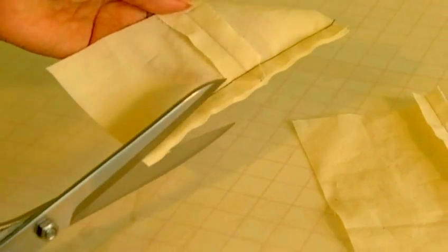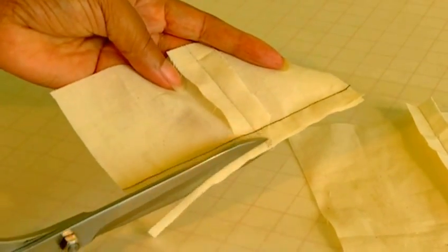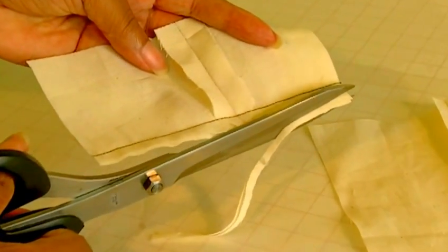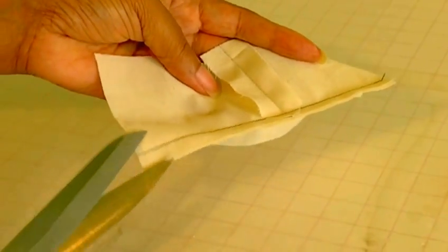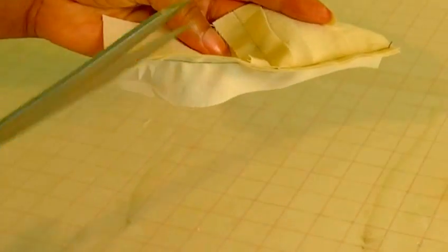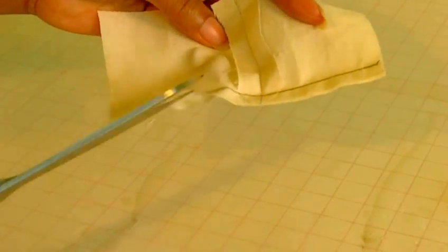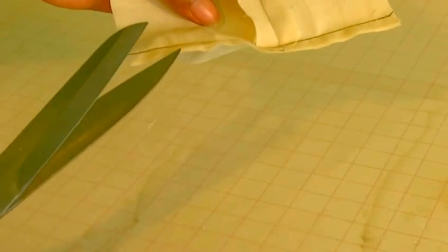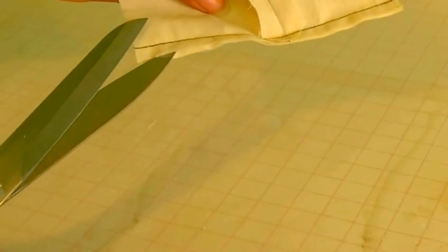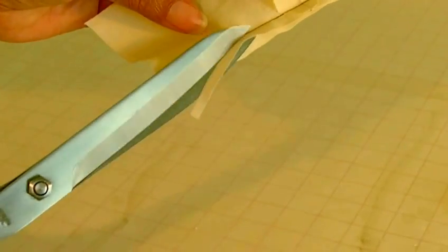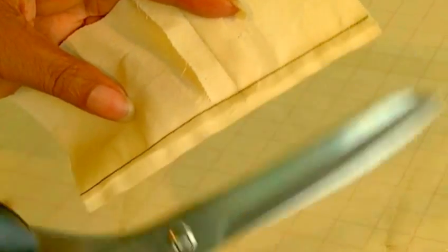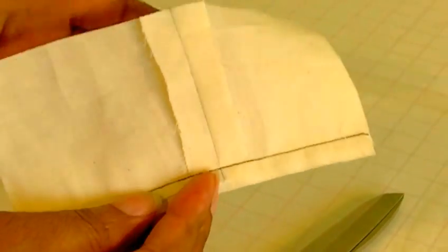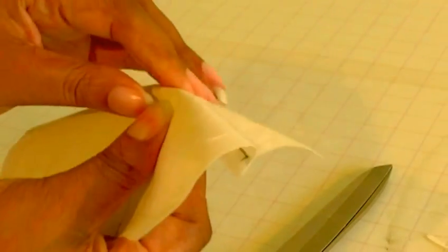And then I would trim. There we go. And then I would grade and see if I can get my scissors in between there. It's so difficult when you do this on camera. Okay, and there we have a trimmed and graded seam. Once that's pressed, you have now reduced